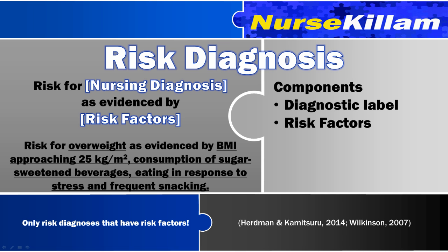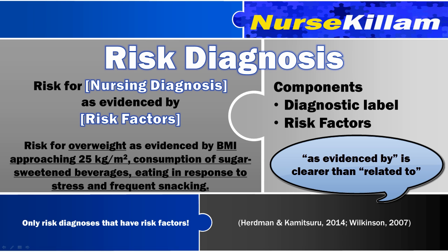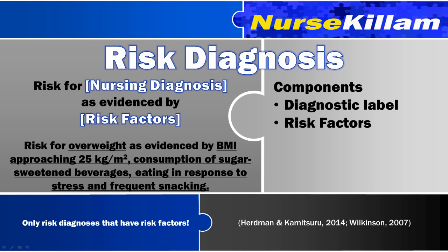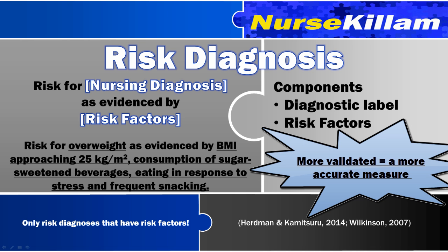There are no related factors or etiology, since only a vulnerability is being identified. NANDA recommends using the phrase 'as evidenced by' if you are following a PES-like format for your diagnosis, because it is clearer than 'related to,' since 'as evidenced by' does not point to an etiology. Keep in mind that the number of risk factors needed to diagnose a patient with a particular risk diagnosis varies based on the diagnosis, because some assessment tools have been more validated than others. It is best to consult your diagnostic handbook for each risk diagnosis you are considering.